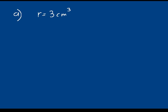Let's do a practice problem of calculating the volume for a sphere with a radius of 3 centimeters. The first thing you should do is write down the formula relating the volume of a sphere to its radius. Volume equals 4 pi times the radius cubed divided by 3. Next, substitute the value you've been given — a radius of 3 centimeters — into that formula.